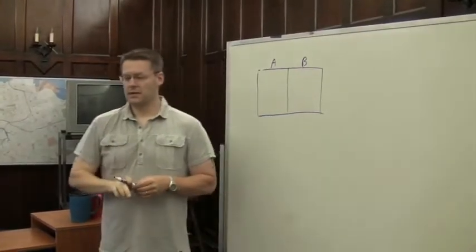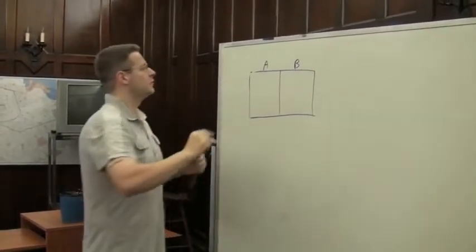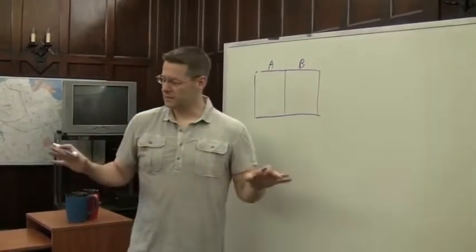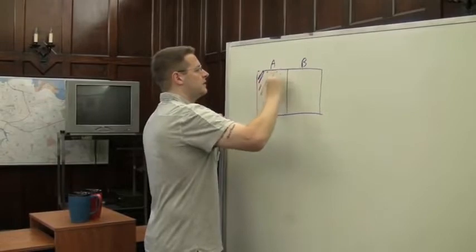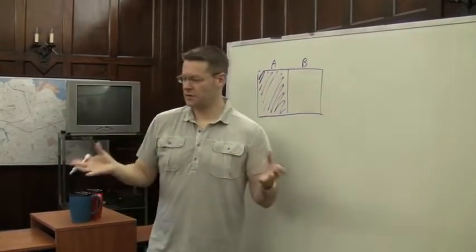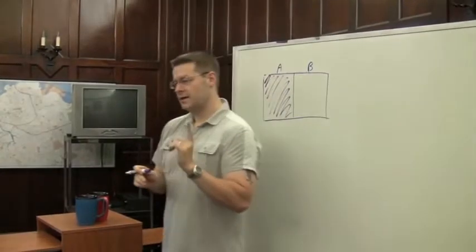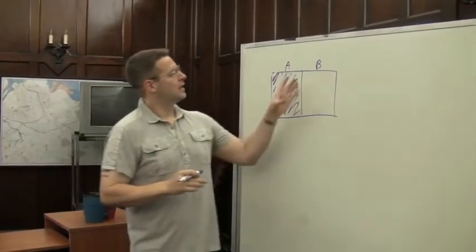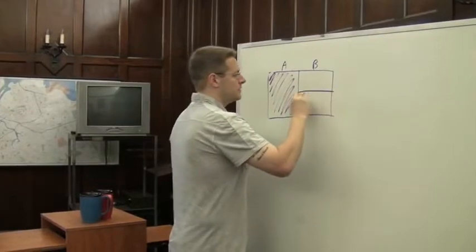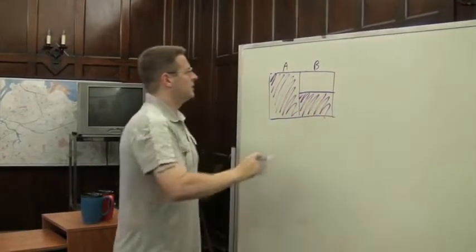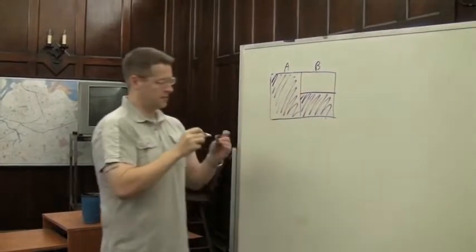In cup A there are 20 red gumballs and nothing else, so all of the space of A is filled in by red gumballs. In cup B we have 10 red gumballs and 10 white gumballs. So how would I represent that? We color half of the B space — the shaded area represents the red gumballs and the unshaded area represents the white gumballs.